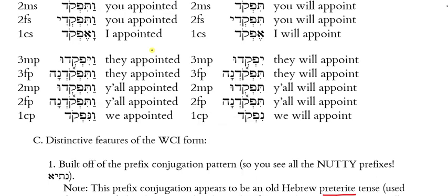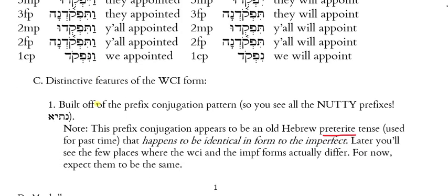Continuing the paradigm: vayifqodu — 'they appointed' (3mp); vatifqodna — 'they appointed' (3fp); vatifqedu and vatifqodna — 'y'all appointed,' masculine then feminine; and vannifqod — 'we appointed.' Again, the forms are all identical to the imperfects on the right, except those have no vavs and these have the vav with the special vowel pointing.